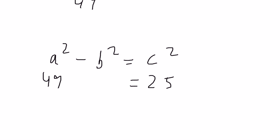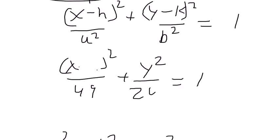So this is going to be 25. If c is 5, c squared is 25, so 49 minus 25 will be 24. B squared is 24.